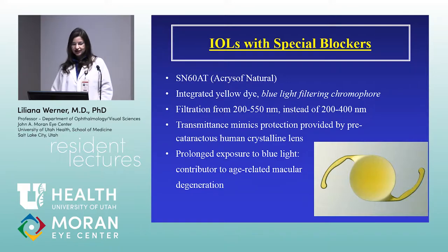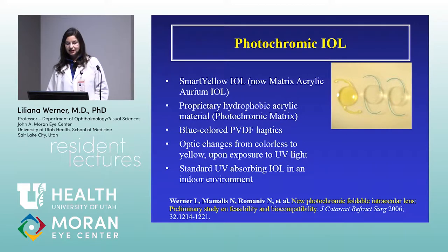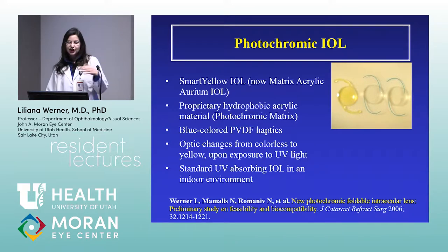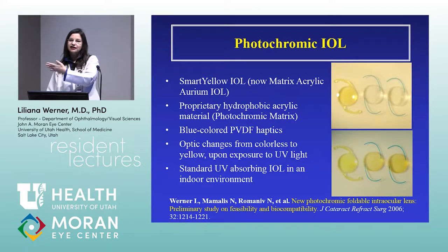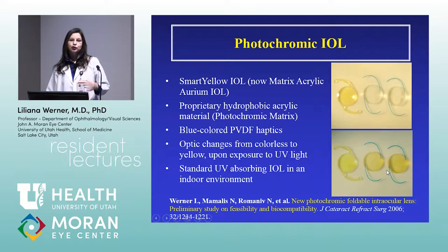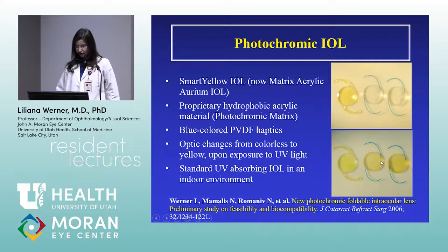We worked on a very interesting project involving a photochromic intraocular lens — a hydrophobic acrylic lens with a special property. When the patient is indoors the lens is colorless, but as soon as the patient goes outside into sunlight, the lens inside the eye very rapidly turns yellow, providing blue-light protection, and vice versa. Unfortunately it is not available in the United States — it's similar to photochromic sunglasses.